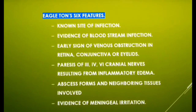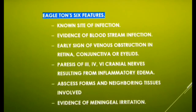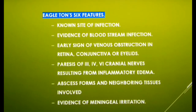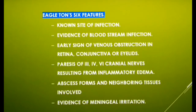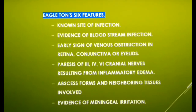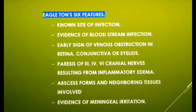Eagleton has suggested six criteria for establishing the diagnosis of cavernous sinus thrombosis: a known site of infection; evidence of bloodstream infection; early signs of venous obstruction in the retina, conjunctiva, or eyelids; paralysis of the third, fourth, and sixth cranial nerves from inflammatory edema; abscess formation and involvement of neighboring tissues; and evidence of meningeal irritation. These are the six criteria suggested by Eagleton to establish the diagnosis of cavernous sinus thrombosis.